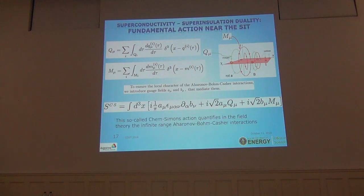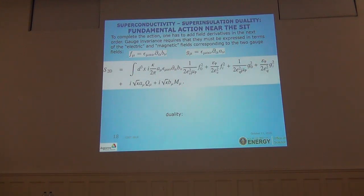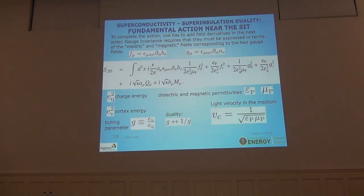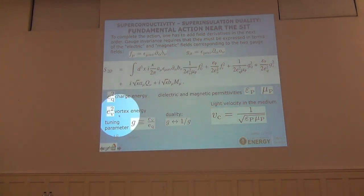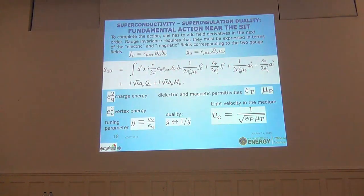Our next step is equally trivial: we write down the next derivative with respect to fields, introduce new gauge fields, and obtain the full action. There is absolutely nothing strange or outstanding here — it is a completely trivial step following, for example, Landau and Lifshitz's textbook step by step. We end up with this action and all the parameters connecting our action with the real material: the characteristic charge energy, characteristic vortex energy, electric and magnetic permittivities, and light velocities of the medium.